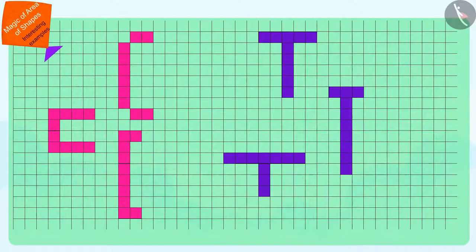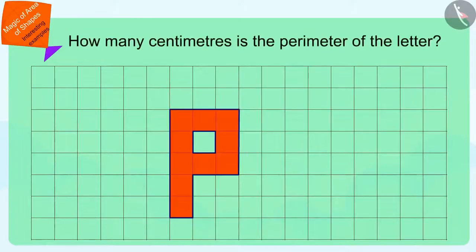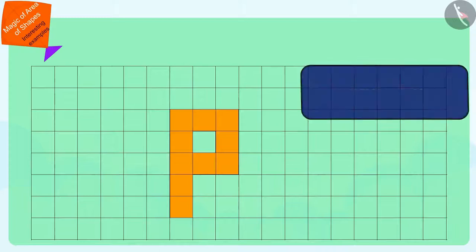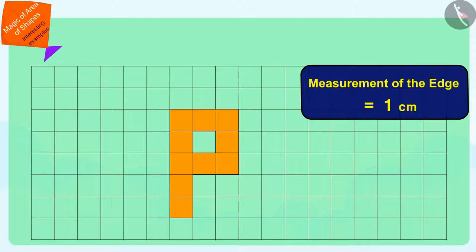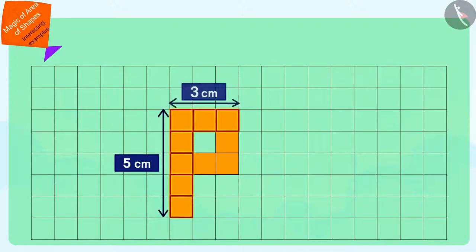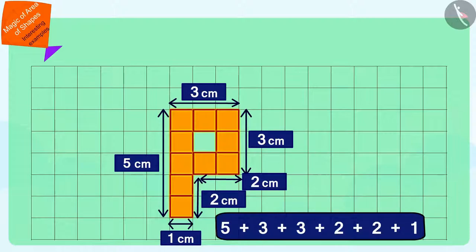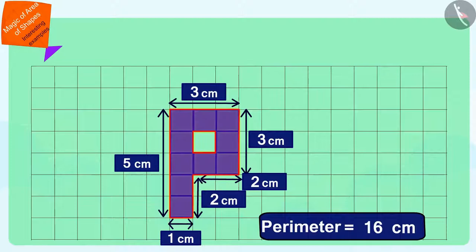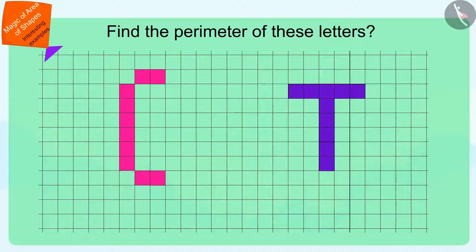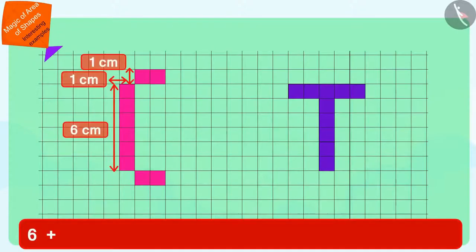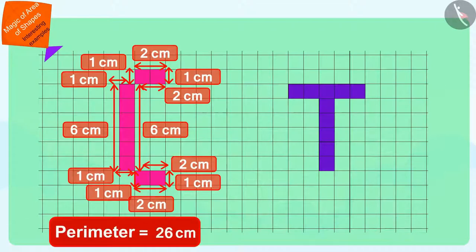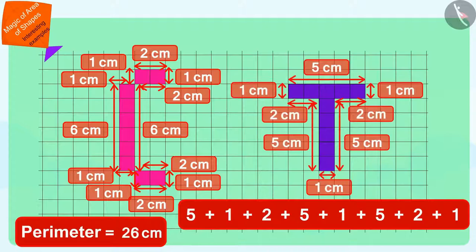Well done, children! Let us see how many centimeters the perimeter of P that Pinky has created is. We can find it very easily. The measurement of the edge of a square is 1 cm. To find the perimeter of this letter, we only need to find the number of squares that fall on its edges and add the measurements of all those edges. In this way, the perimeter of Pinky's letter P is 16 cm. Can you now find the perimeter of the letters of Chanda and Tufan? The perimeter of the letter C of Chanda is 26 cm and the perimeter of the letter T of Tufan is 22 cm.